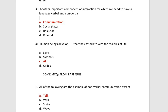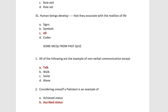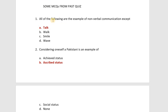This lecture covers 31 MCQs, which are very important. All of the following are examples of non-verbal communication — you have to identify which option is verbal. Remember the difference: language and talk are verbal; signs, codes, and symbols are non-verbal. Considering oneself a Pakistani is an example of ascribed status.